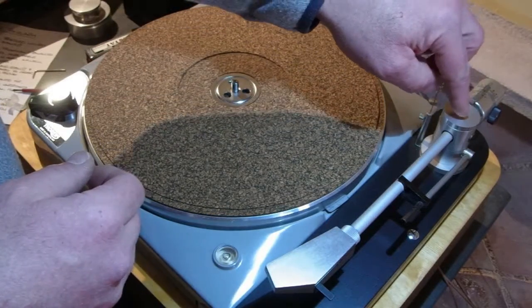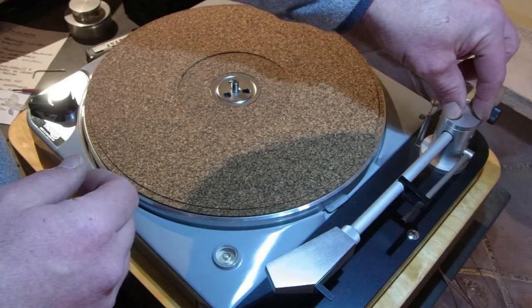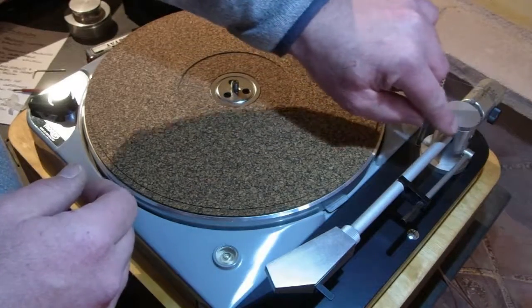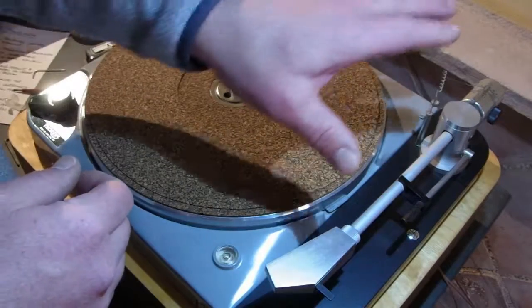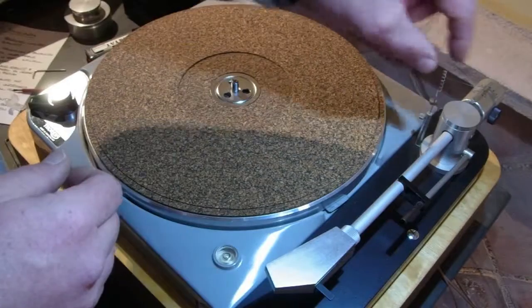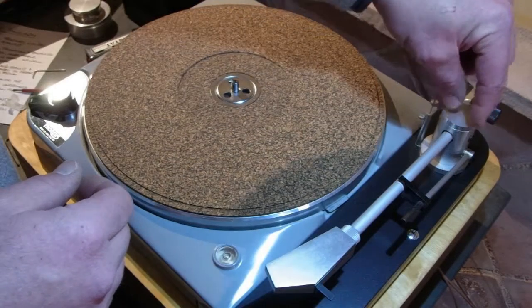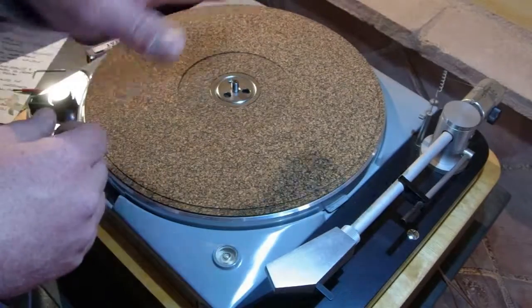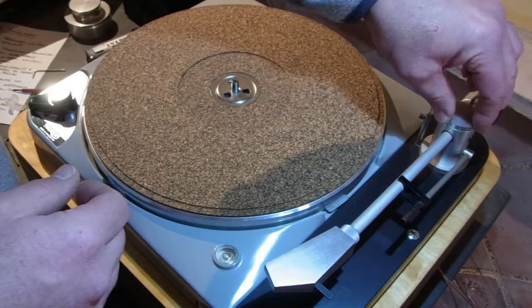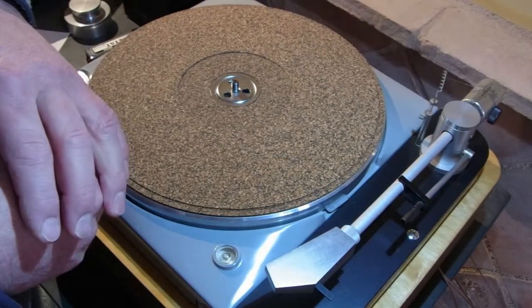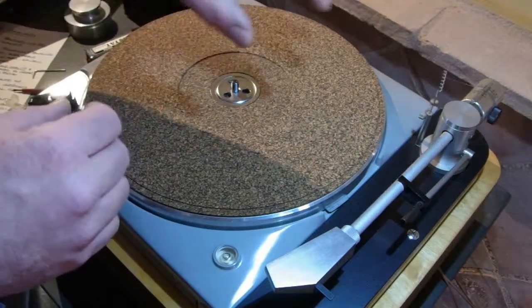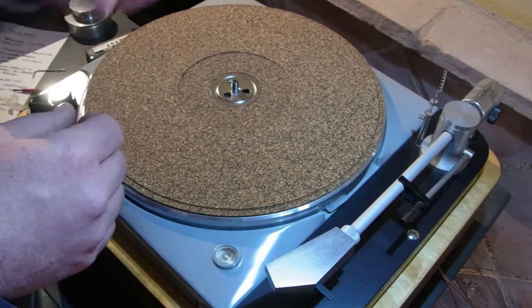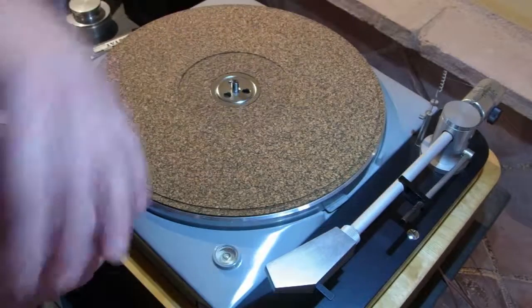Vertical tracking force is applied through this dial. There's a scale on here with grams. Once the arm's been floated, you can apply the tracking force by adjusting the dial on the top here. I found it very accurate to within about a quarter of a gram, which is close enough to get the arm set up. And you can dial it in by listening to get the final setup.